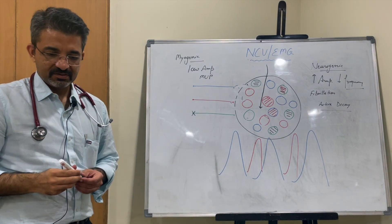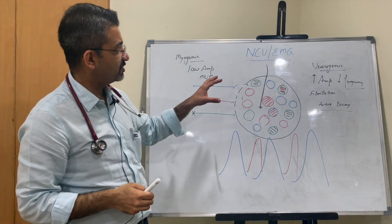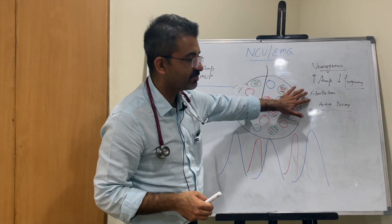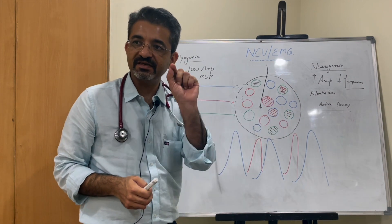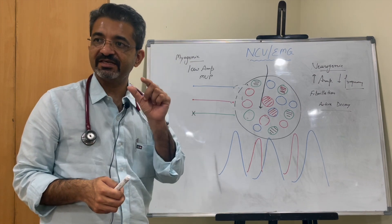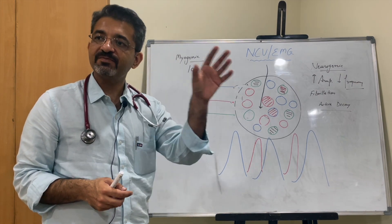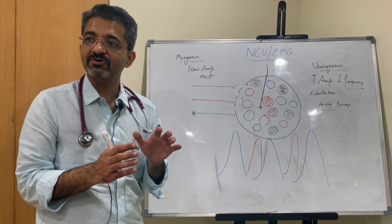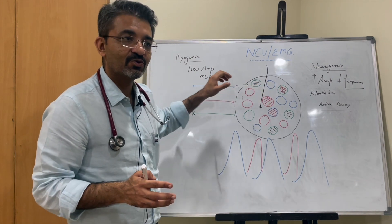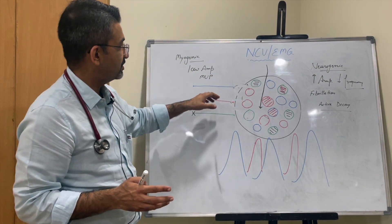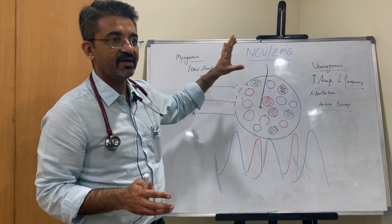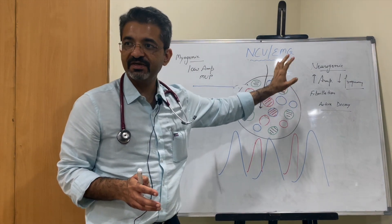In brief, this covers NCV and EMG. In EMG, fibrillation means a single muscle fiber is involved and denotes very active degeneration. Fasciculation means multiple motor fibers are involved and denotes chronicity, because nerves take time to grow sprouts. There are two patterns of motor unit potential: myogenic pattern and neurogenic pattern. This completes your EMG and NCV lecture.